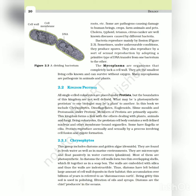Bacteria reproduce mainly by fission. Sometimes, under unfavorable conditions, they produce spores. They also reproduce by a sort of sexual reproduction by adopting a primitive type of DNA transfer from one bacterium to the other. The mycoplasma are organisms that completely lack a cell wall. They are the smallest living cells known and can survive without oxygen. Many mycoplasma are pathogenic in animals and plants.